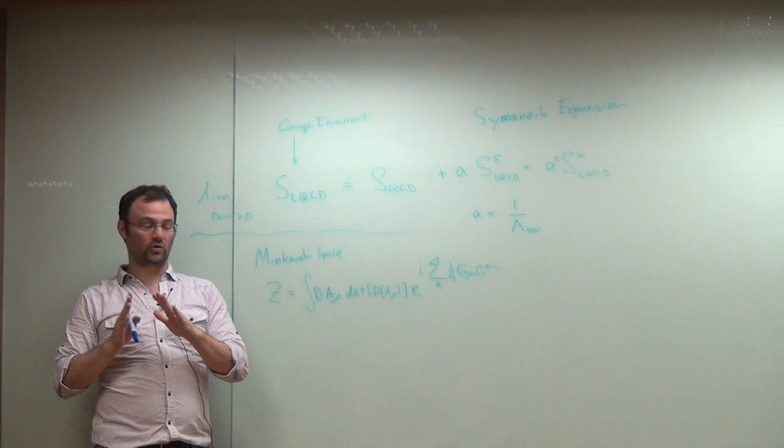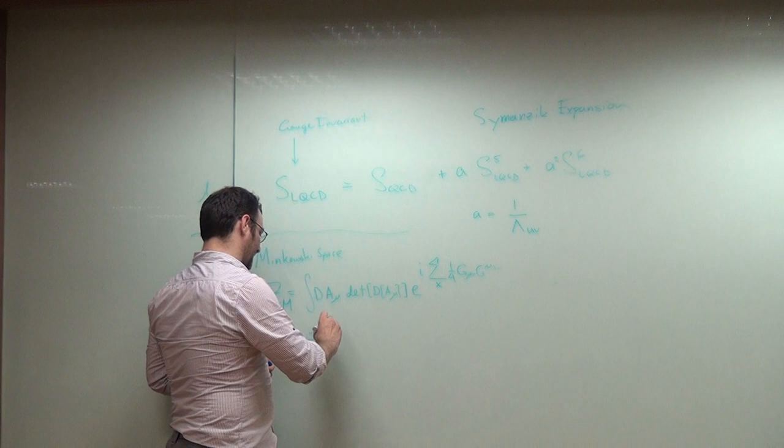The reason we go to Euclidean space, this is Minkowski, you have the same thing except now it's a Euclidean integral, and you get E to the minus sum over X.